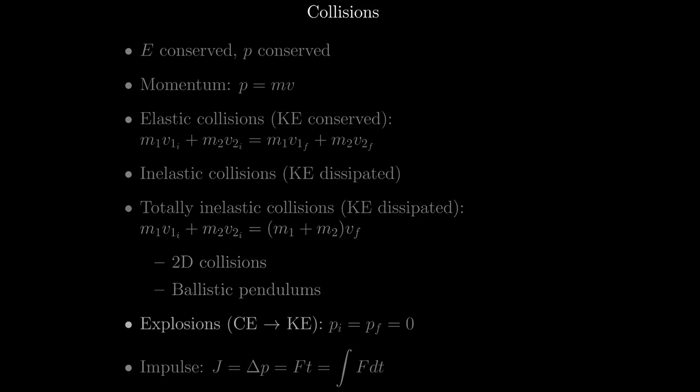In explosions, also known as recoil, chemical energy is converted into kinetic energy, launching particles outward in many directions, as in a bomb. These can be thought of as uncollisions. In explosions, the initial and final momentum both equal zero.